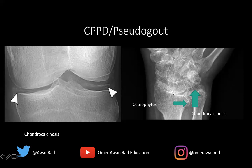You may also have second and third MCP joint involvement in the hand with characteristic hook-like osteophytes — another characteristic finding of CPPD arthropathy. In the knee, the degenerative changes are more pronounced in the patellofemoral compartment versus the medial and lateral femorotibial compartments. Under synovial analysis, you're looking for rhomboid-shaped crystals — not needle-shaped — with positive birefringence under polarized light. Typically it's treated with NSAIDs, glucocorticoids, or colchicine.